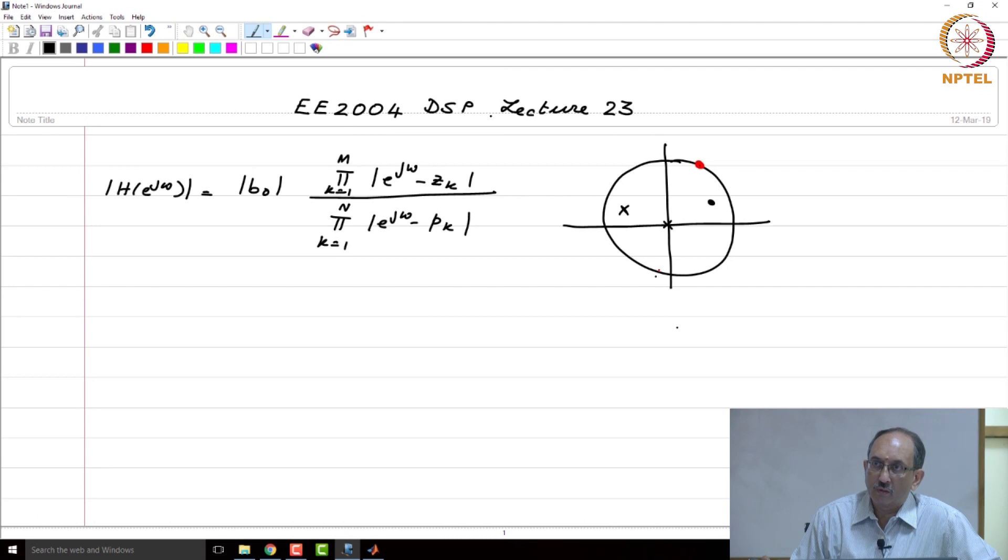And if you go near a pole, the frequency response will be large in magnitude. If you go near a zero, the frequency response will dip. So in general, if there are both poles and zeros, poles tend to provide gain, zeros tend to provide attenuation.